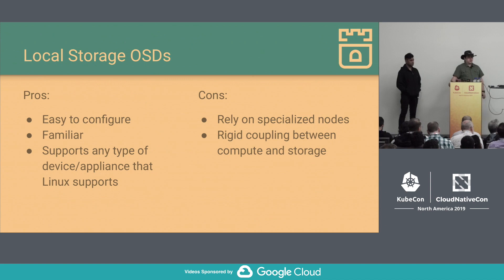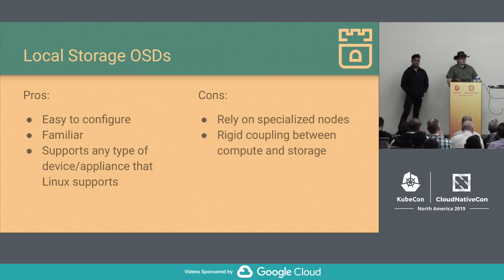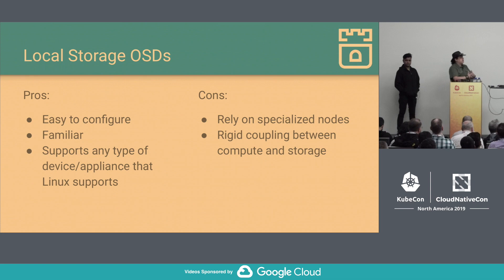You define your storage nodes, define your local devices, and Rook takes care of the rest — it prepares the storage devices for consumption by Ceph and starts the OSD pods on the nodes containing those storage devices. On the upside, these things are easy to configure, especially for storage administrators coming into Kubernetes for the first time, as they're used to attaching physical disks to physical nodes. This supports any type of device or appliance that Linux supports. On the other hand, this is a concern for people deploying on cloud environments — it typically requires specialized nodes and enforces a rigid coupling between compute and storage, with no easy way to spin up new storage dynamically.